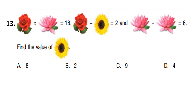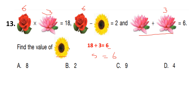Question number 13. Rose multiplied by lotus equals 18. Rose minus sunflower equals 2. Lotus plus lotus equals 6. Find the value of sunflower. Lotus plus lotus equals 6, so 1 lotus is 3. Rose multiplied by 3 equals 18, so rose equals 18 divided by 3 equals 6. Then 6 minus sunflower equals 2, so sunflower equals 6 minus 2, which is 4. Answer is option D.